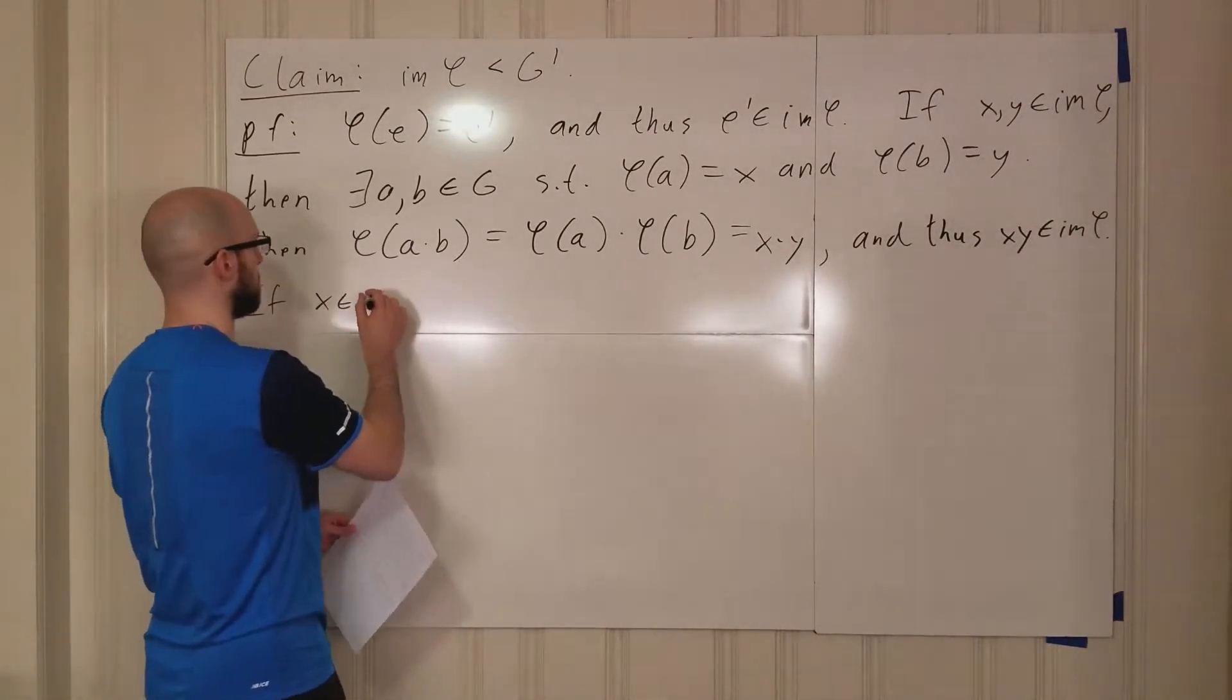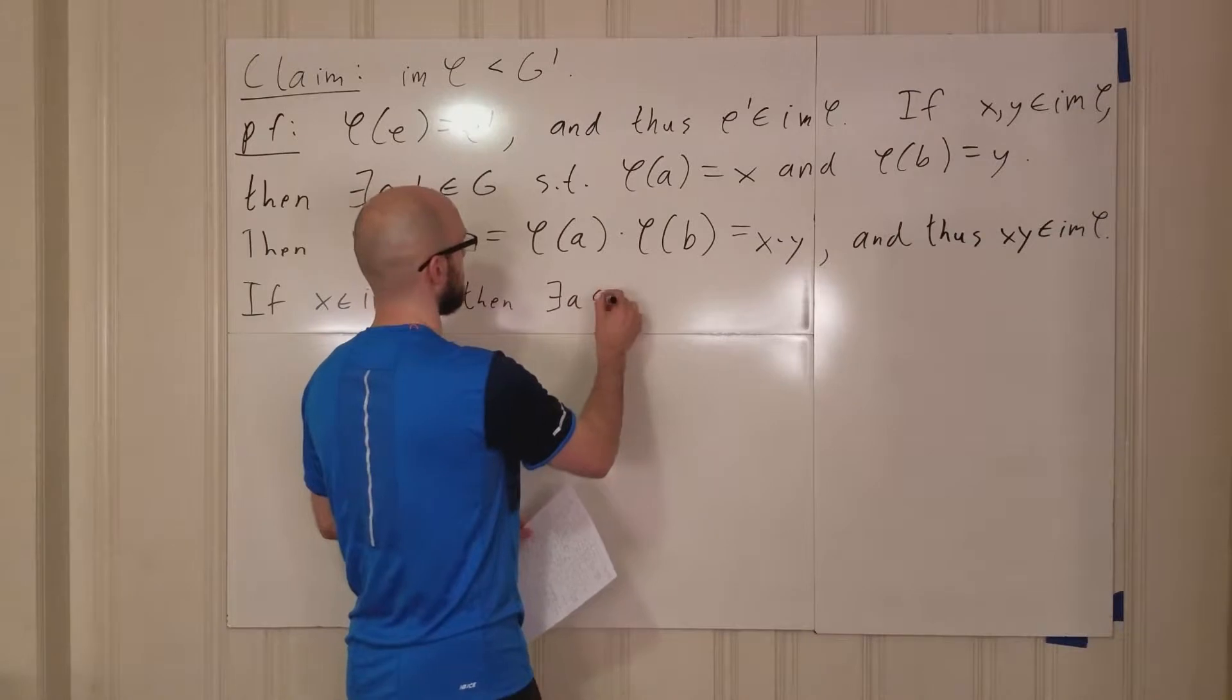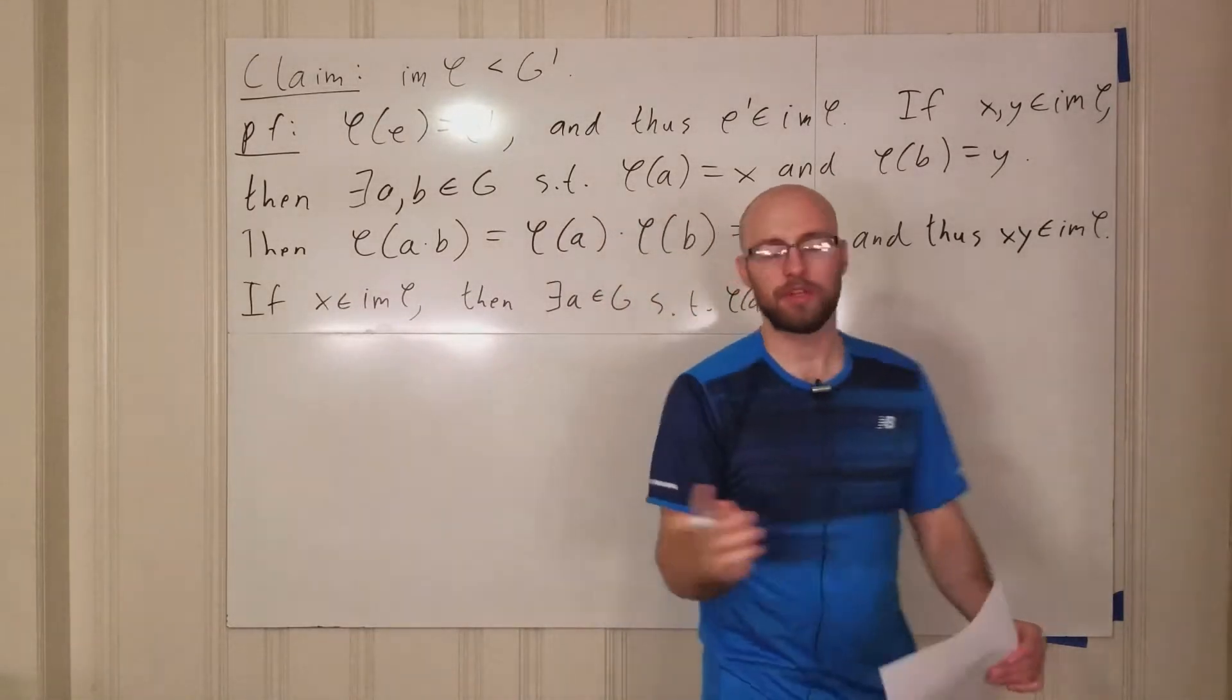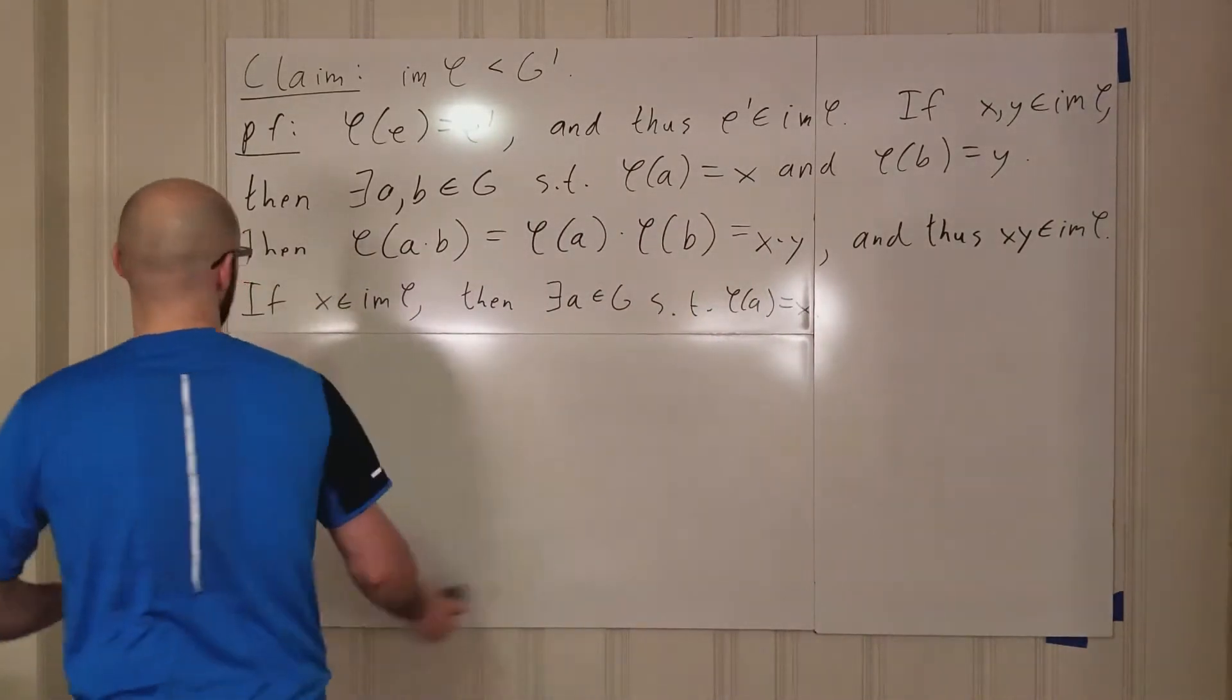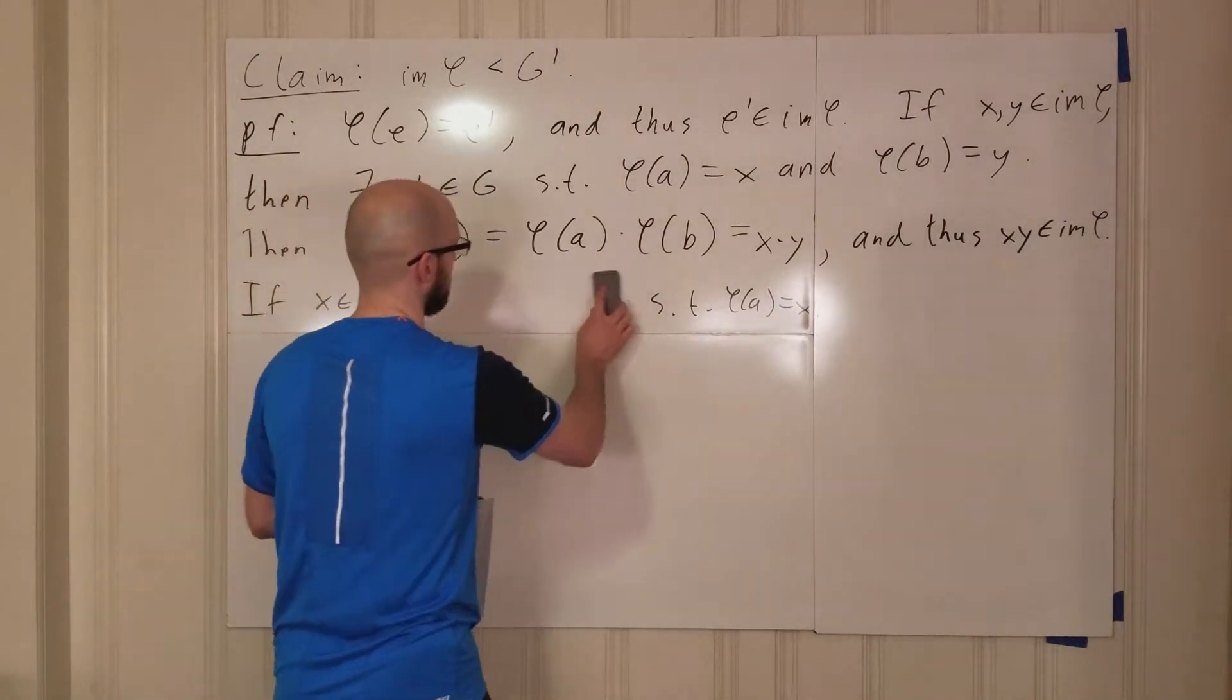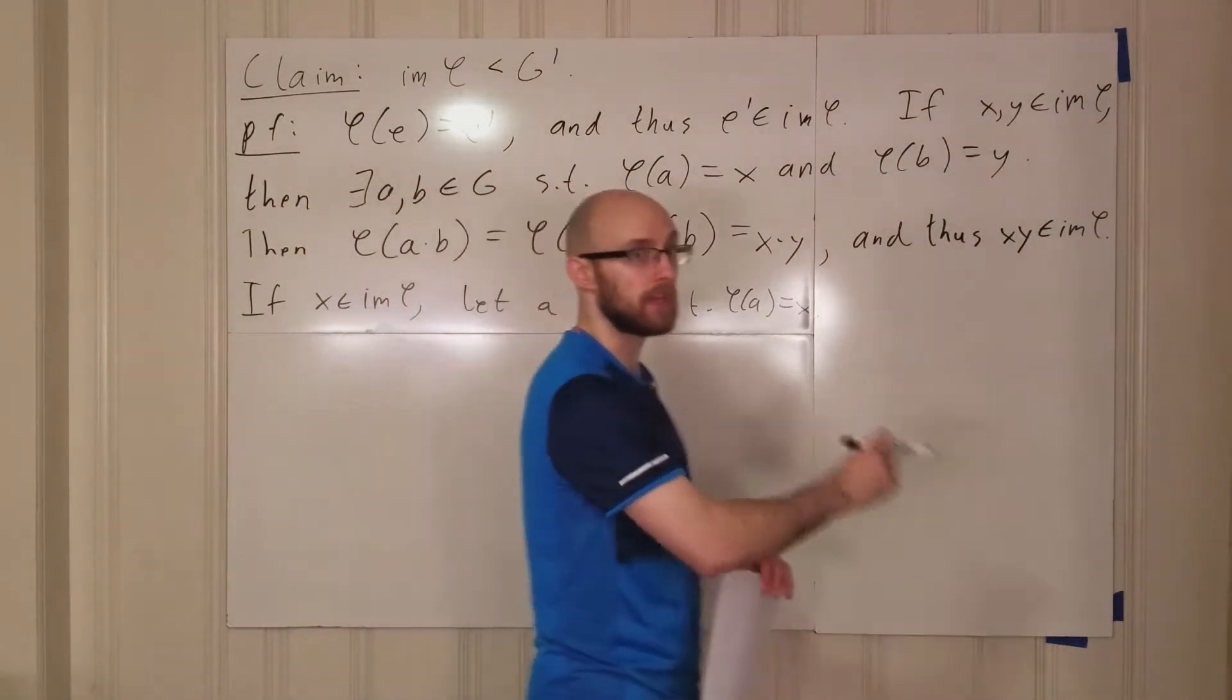Now let's suppose X is in the image of phi. Then there exists an A in G such that phi of A equals X. So we want, now we're doing closure... Actually, this is a little wordy, because I've already said this. If X is in M, we're just gonna say let A be such that phi of A equals X.